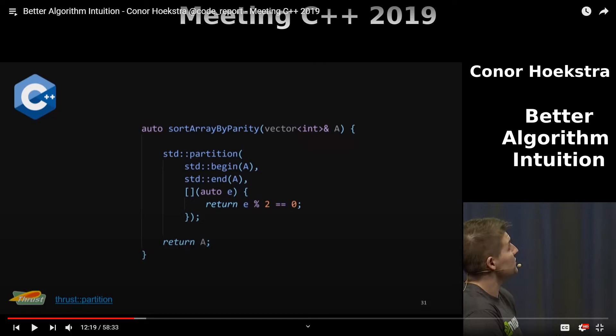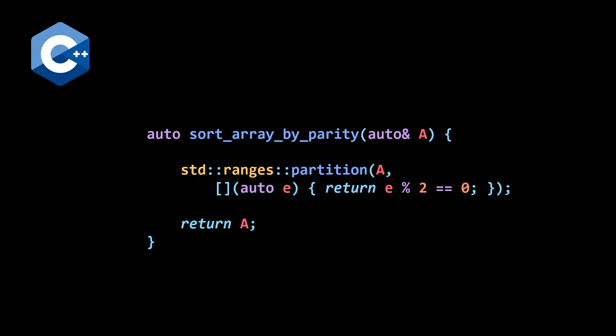And note that this is not a stable algorithm. There is a stable version of this algorithm called stable_partition that keeps the relative orders. But for this, the problem doesn't ask for you to maintain the relative order. So that's great. We can do this in C++ with a single algorithm called partition.